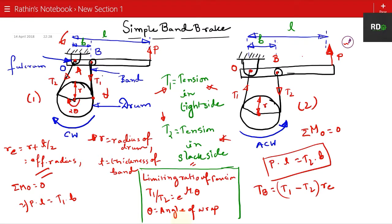This entire portion is the angle of wrap, θ. This is where the band has touched the drum and where it has left. This entire part is the angle of wrap, meaning the portion where the band has wrapped around the drum.